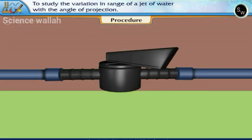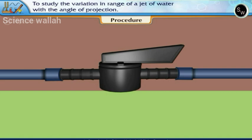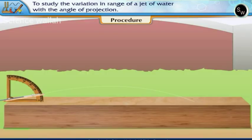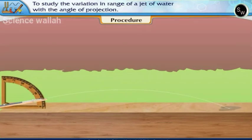Open the valve attached to the rubber tube. Water jet moves along a parabolic path and falls at some distance. Mark the point A where water falls.